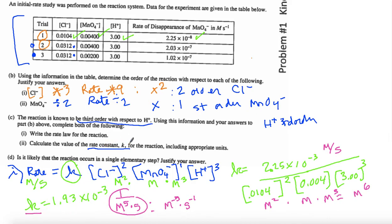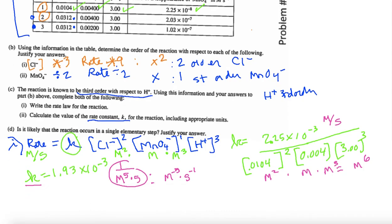Calculate the value of the rate constant for the reaction. Include appropriate units. Each of those are worth one point. Now, our next part, I'm just going to scroll down here. Let me go back to my pen. Make it easier.